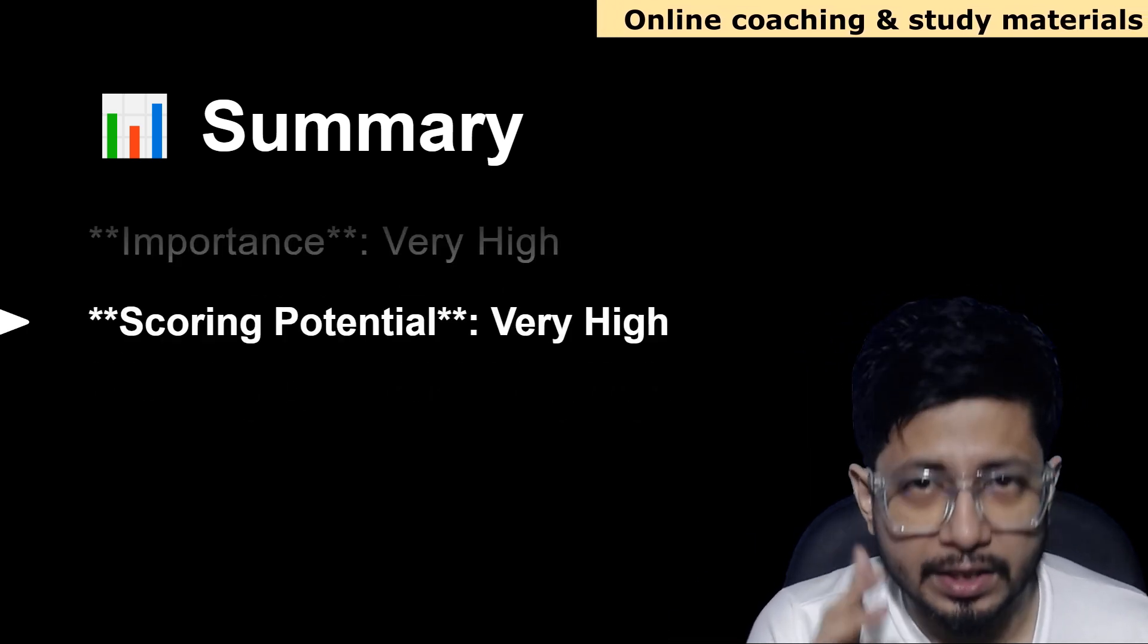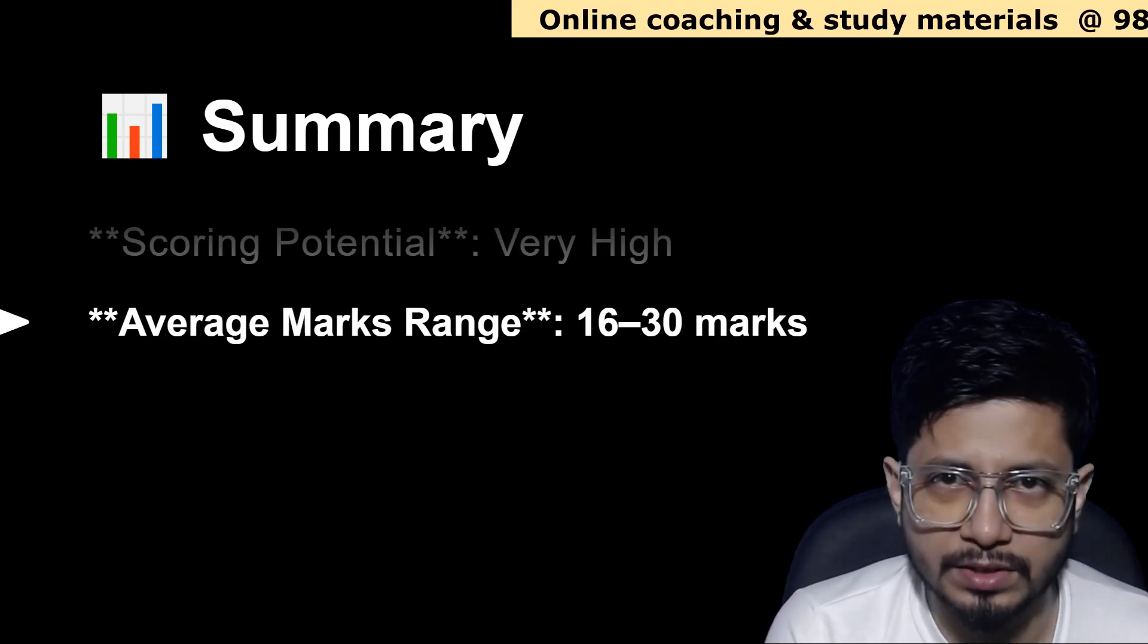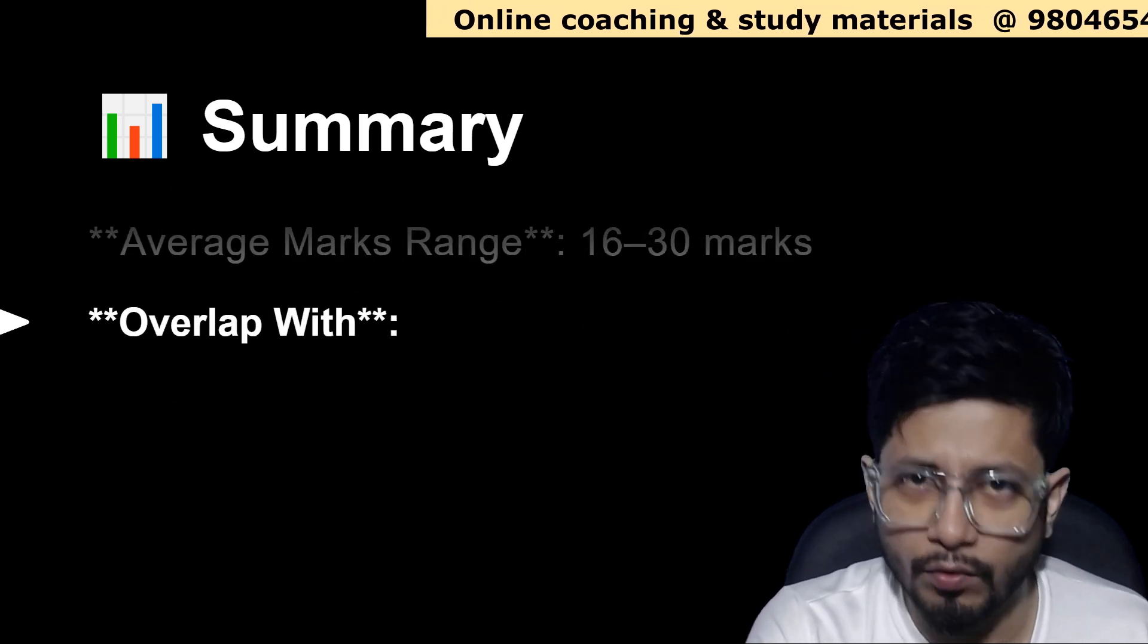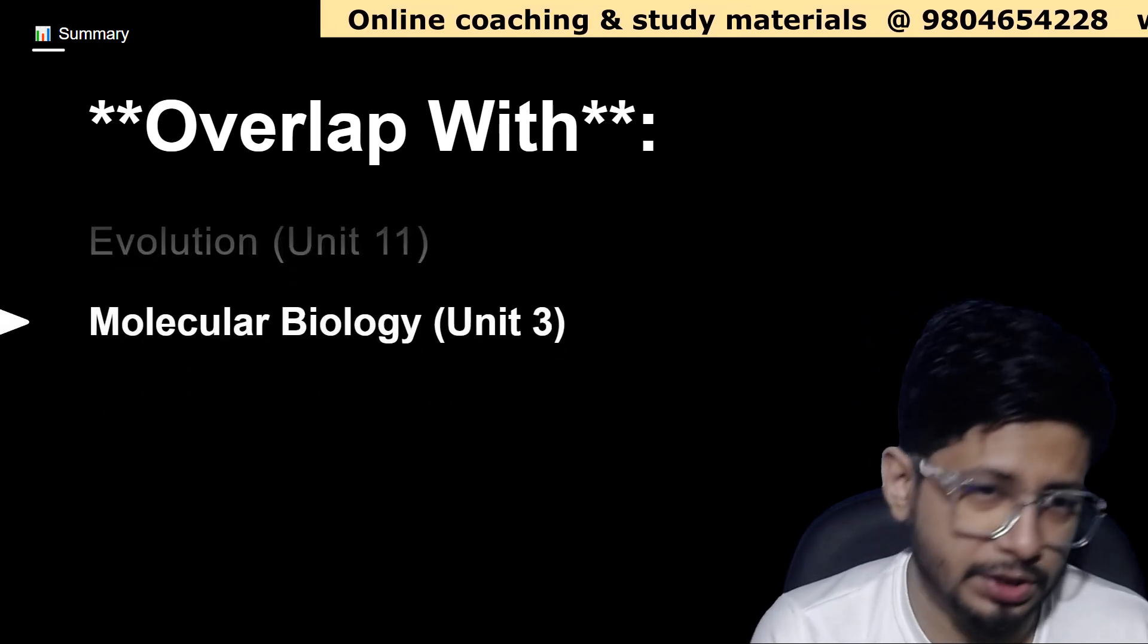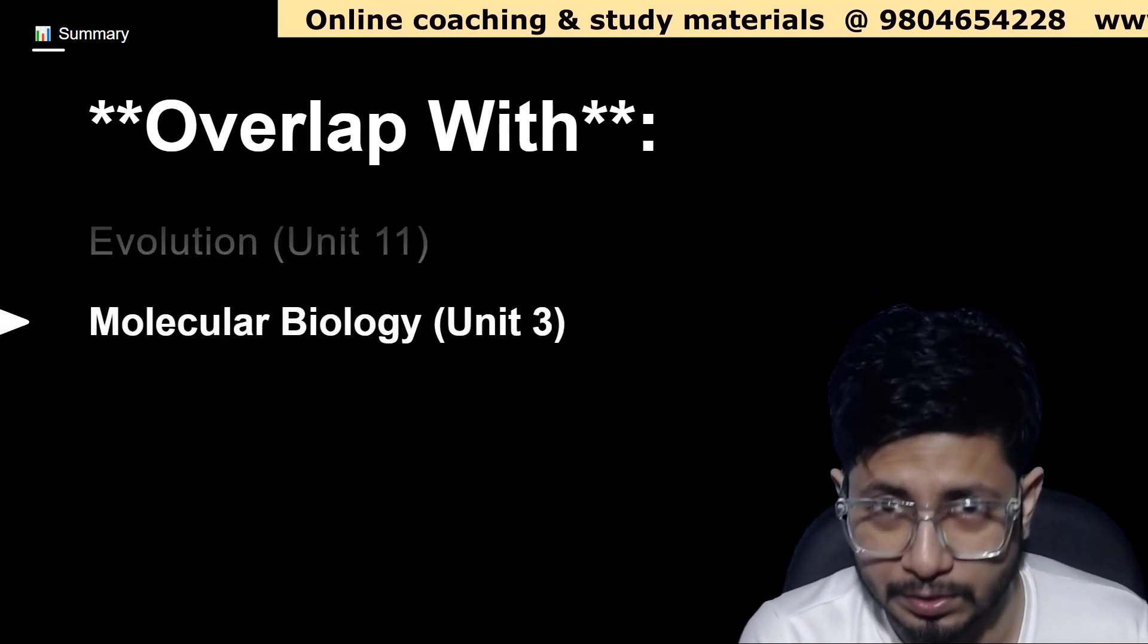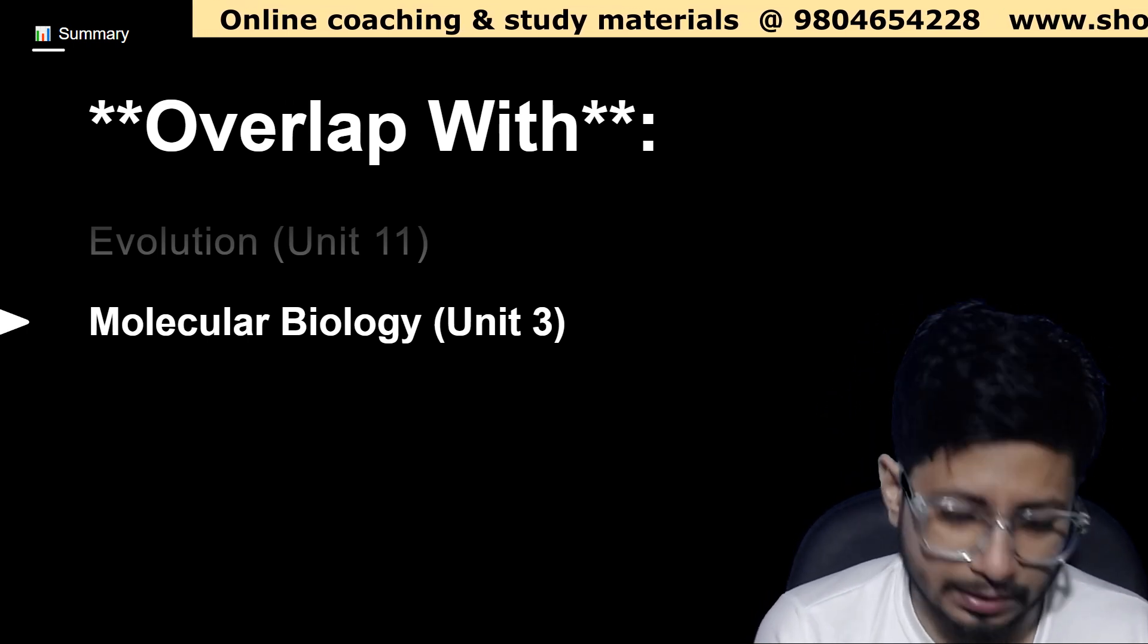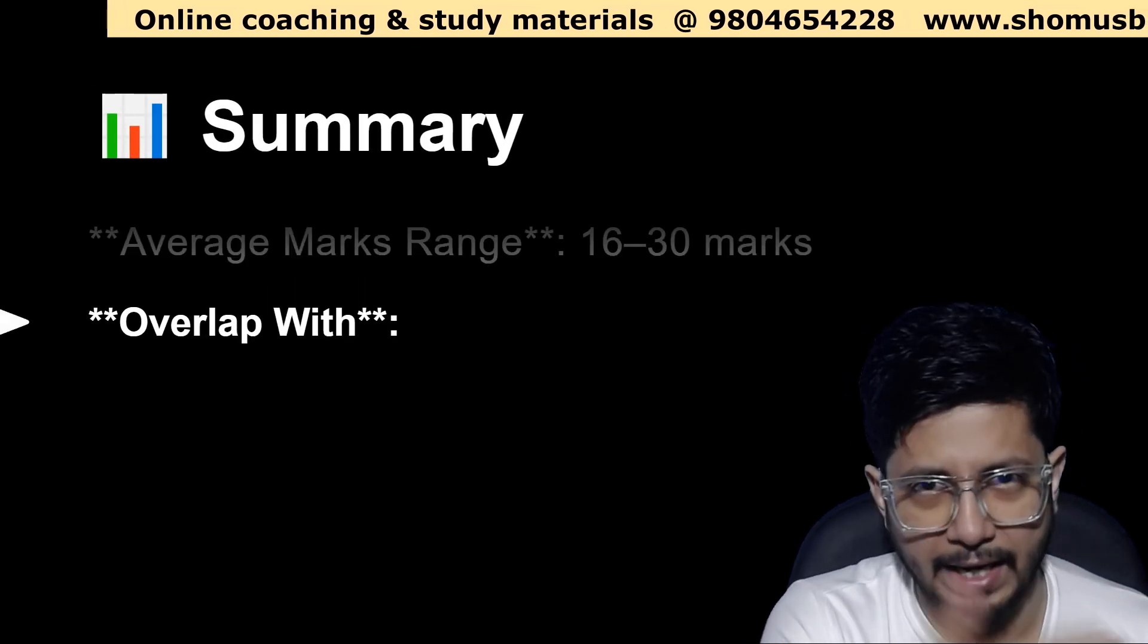The scoring potential is also very high, and the average marks range that you can obtain from this unit in the exam is 16 to 30 marks. The overlap of the genetics unit is with evolution (unit 11) in population genetics, and with molecular biology (unit 3) where we have molecular genetics tagged with this genetics unit as well.